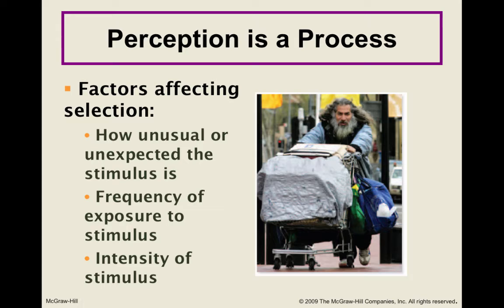If something happens repeatedly, we are more likely to notice it. If it's something more intense than other things — louder, smellier, brighter — or something that we are specifically told or choose to focus on. If you did the selective attention test before watching this lecture, you know what I'm talking about, because if you're told to pay attention to something, you may miss something else going on around it — as in the case of the gorilla walking through people passing a basketball around.